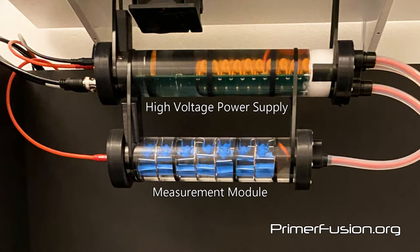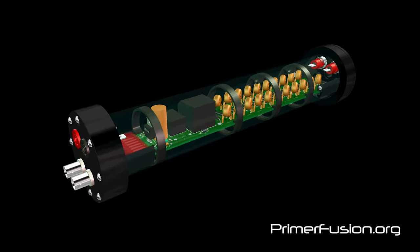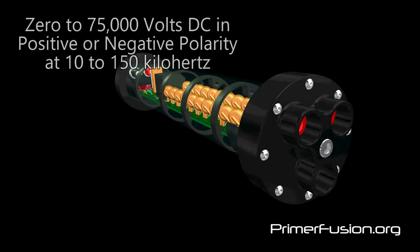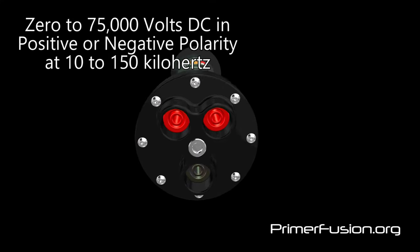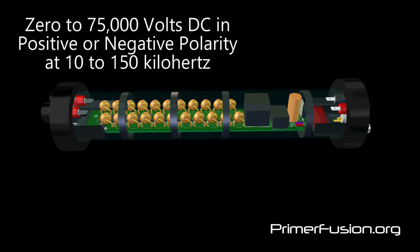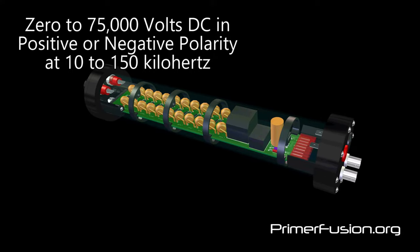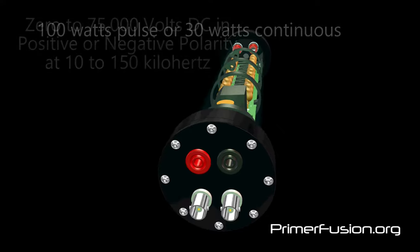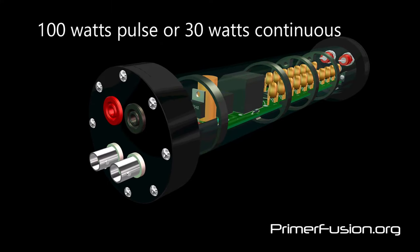The high voltage power supply and the measurement module are filled with mineral oil to cool the components and provide high voltage insulation. I designed these high voltage power supplies to meet the following specifications. The output voltage will be adjustable from zero to 75 kilovolts DC, in either positive or negative polarity, at an adjustable frequency from 10 to 150 kilohertz. The output rating is 100 watts in pulse mode, or 30 watts continuous.